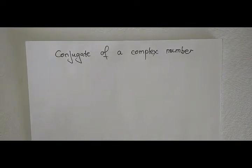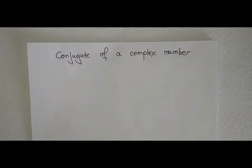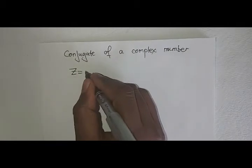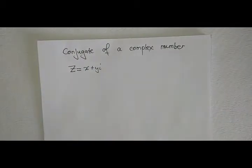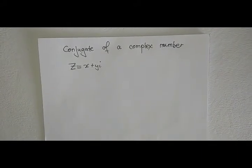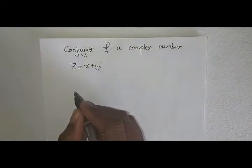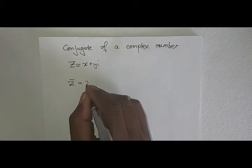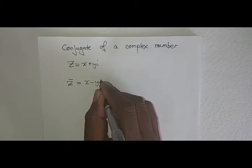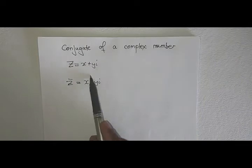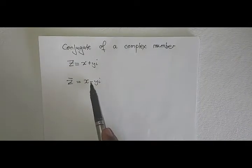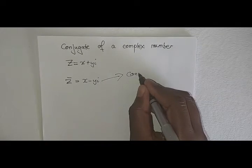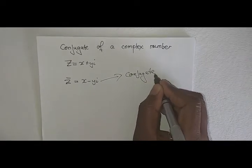We would now like to look at the conjugate of a complex number. We know that a complex number Z is given by X plus Yi. The conjugate of a complex number, represented as Z-bar, is equal to X minus Yi. What's important is on the imaginary part: if it's positive, you put a negative; if it's negative, you put a positive. This is the complex conjugate.